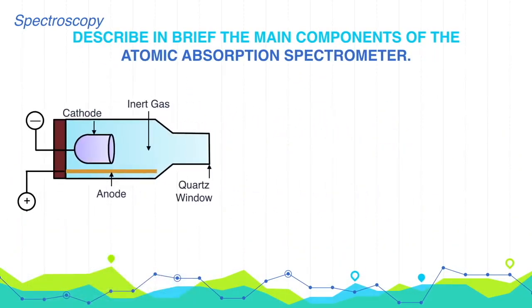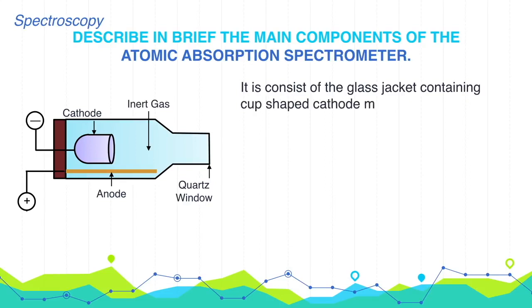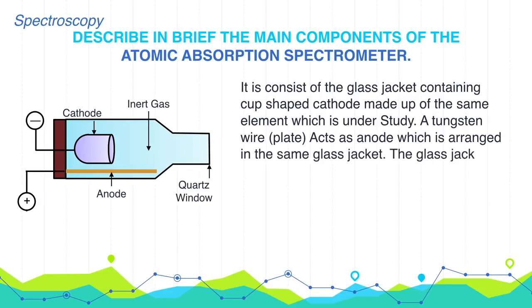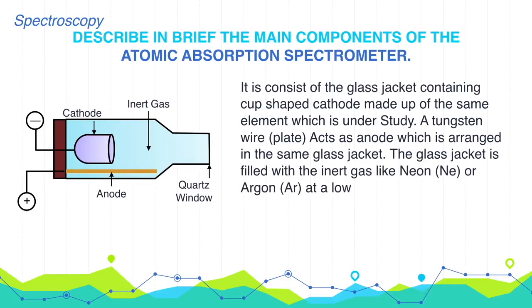1. Source of Radiations. It is a hollow cathode lamp. It consists of a glass jacket containing a cup-shaped cathode made up of the same element which is under study. A tungsten wire or plate acts as anode, arranged in the same glass jacket. The glass jacket is filled with an inert gas like neon or argon at low pressure.